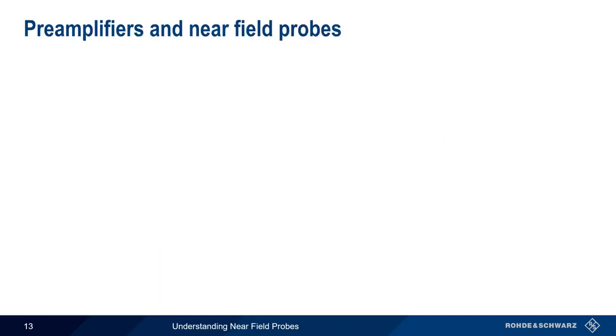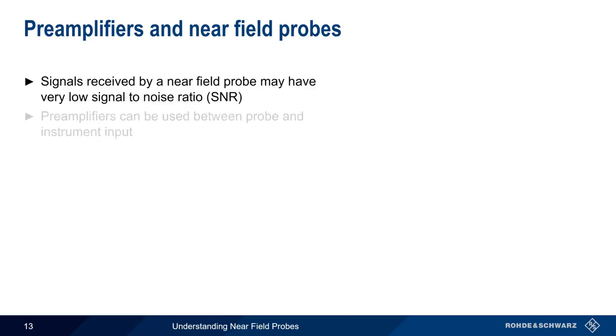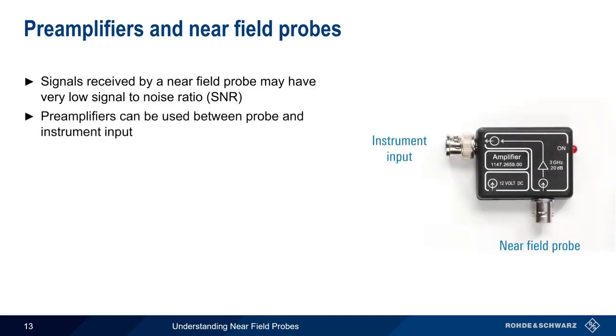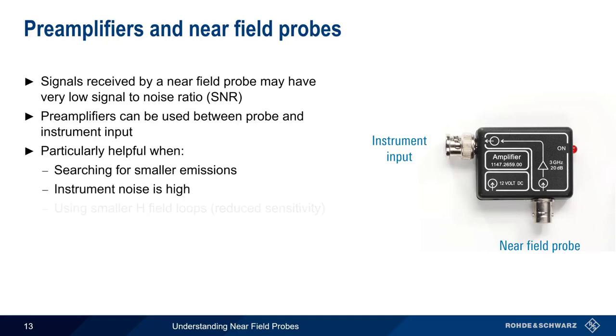One final topic we need to cover is preamplifiers. A signal received from a near-field probe may have a very low signal-to-noise ratio. Therefore, preamplifiers are sometimes used between the near-field probe and the instrument input in order to increase the received signal level. Preamplifiers are particularly helpful in three cases. The first is when the level of emissions is very low. The second is when the oscilloscope, spectrum analyzer, or receiver has a high level of internal noise. And the third case is when using smaller H-field loops, since the smaller loops have reduced sensitivity.